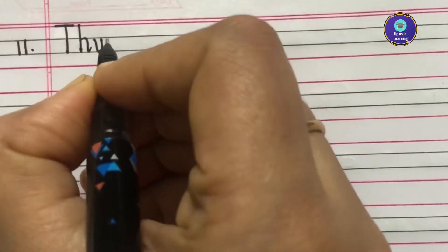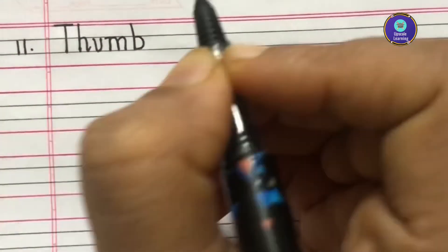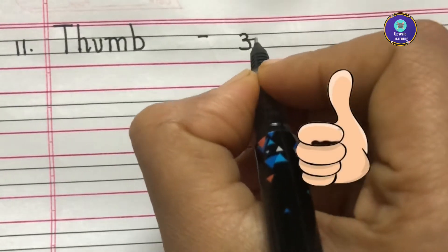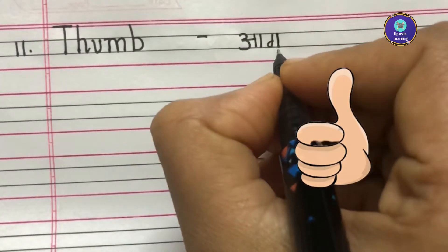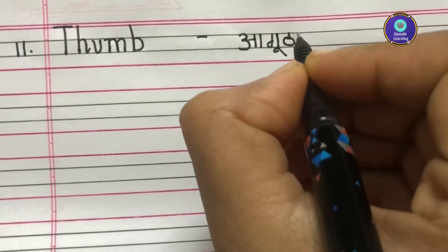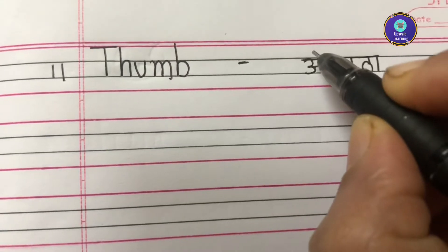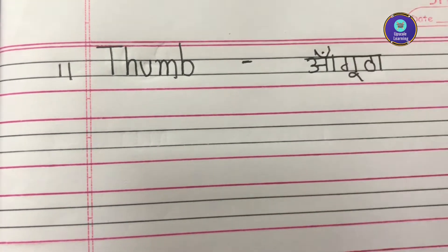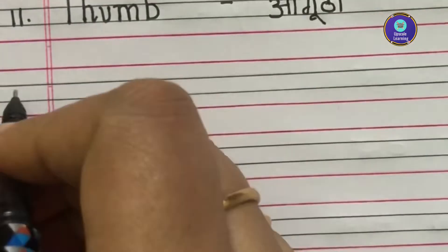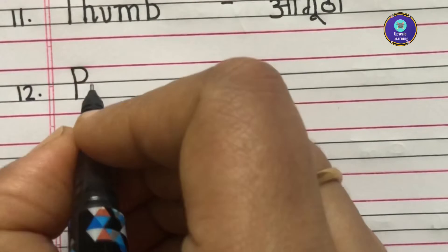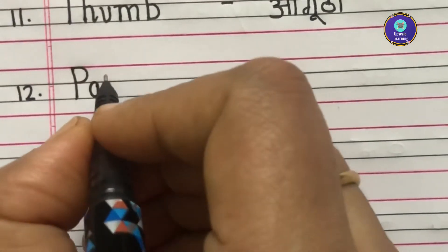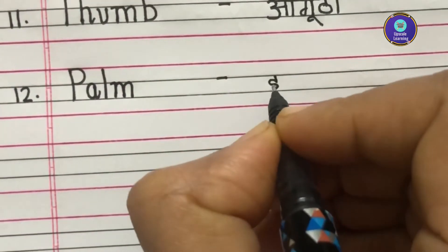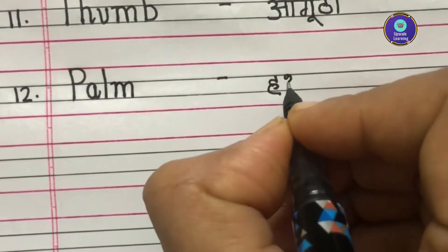Thumb, T-H-U-M-B. Thumb is called as Anghoota in Hindi. Palm, P-A-L-M. Palm ko hum Hindi mein Hateli kehtae hain.